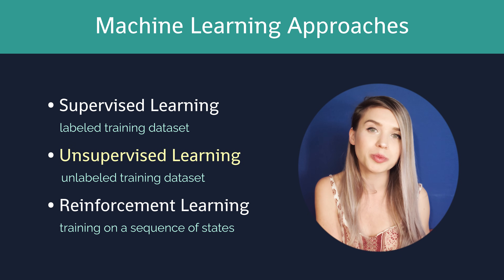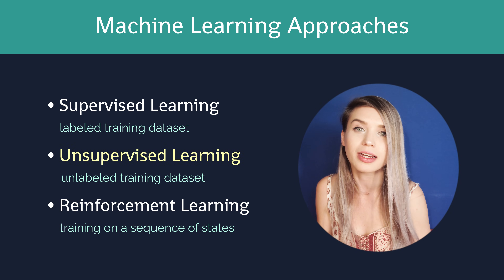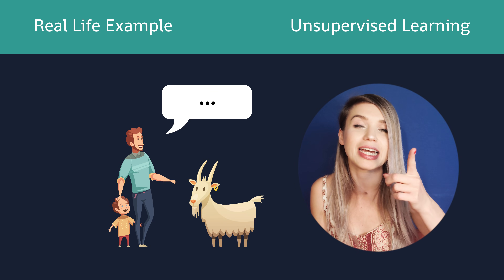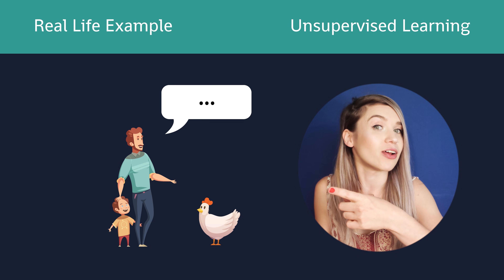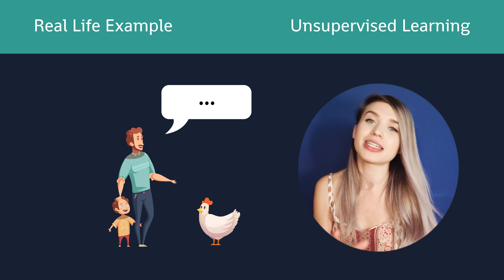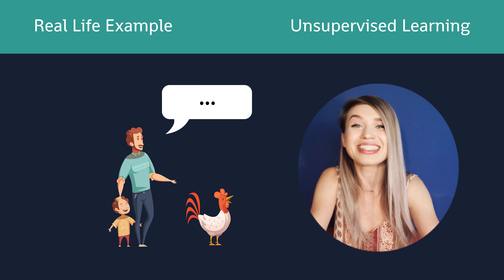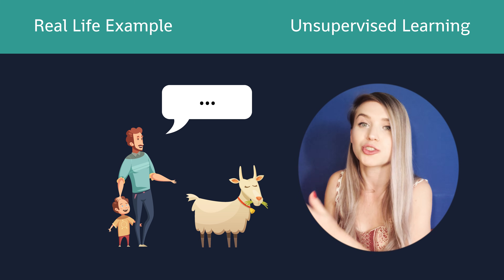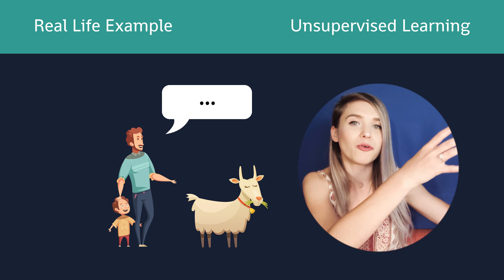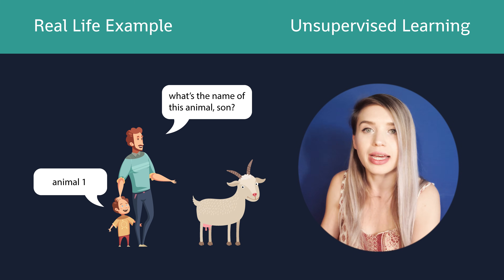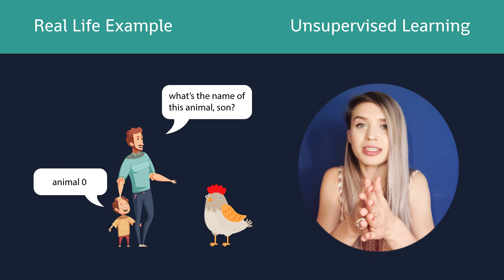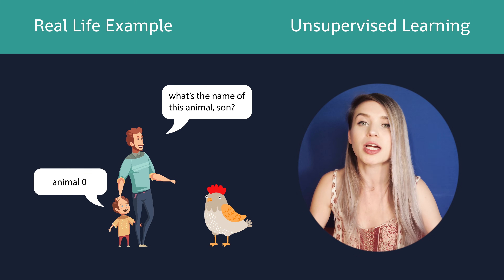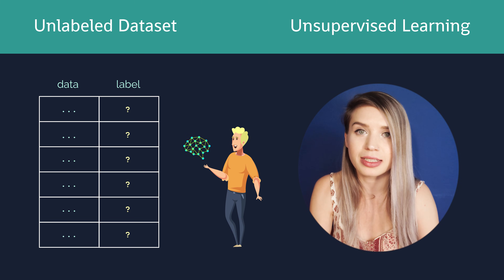Another training approach is called unsupervised learning or self-supervised learning. It corresponds to taking your kid into the same farm, pointing at the goat but saying nothing, and then pointing at the chicken and also saying nothing. Eventually your kid will realize that something is off and he needs to take things into his own hands. He'll notice that this animal has four legs while the other has two legs and two wings. He wouldn't know the four-legged animal is called a goat or the two-legged one is called a chicken, but he'd be able to differentiate between them. In the world of computers, that means we are providing an unlabeled dataset to our neural network.